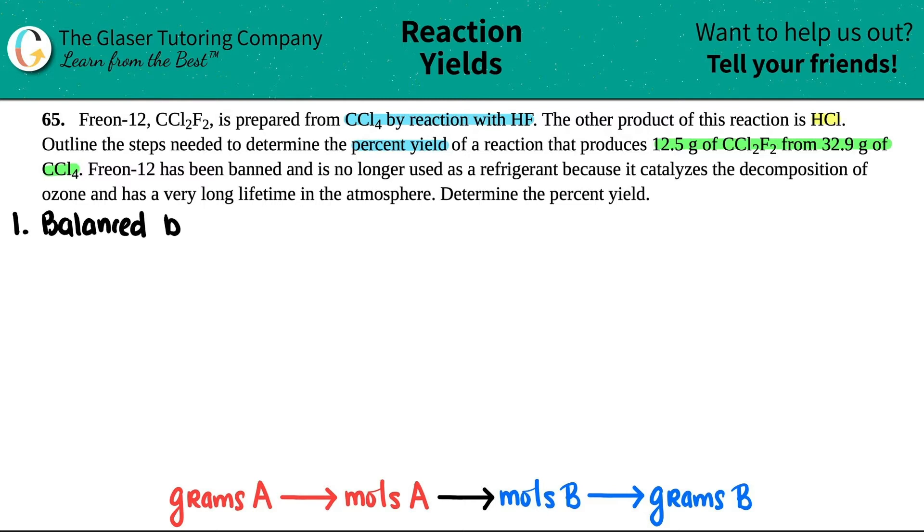Now, we've done tons of problems getting a balanced equation. So you could try to pause the video now and see if you could make it up yourself, but this is going to be a little quick. So it says that this compound is prepared or made from CCl4 with HF. So I know that those are my two reactants. I have CCl4 plus HF, and that's going to produce our freon, which is CCl2F2. And then they gave us a hint: the other product is HCl, so plus HCl.